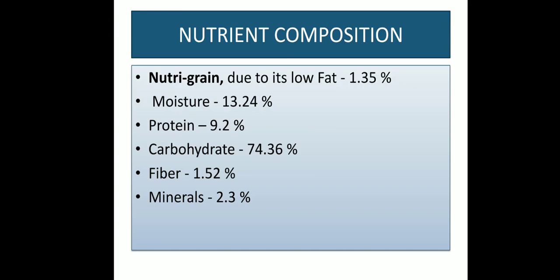Nutrient Composition: Raghi is also known as Nutri-grain because it contains a low amount of fat, i.e. 1.35%. Moisture is 13.24%. Protein content is 9.2%. Carbohydrate is 74.36%. Fibre content is 1.52%. And Minerals are 2.3%.